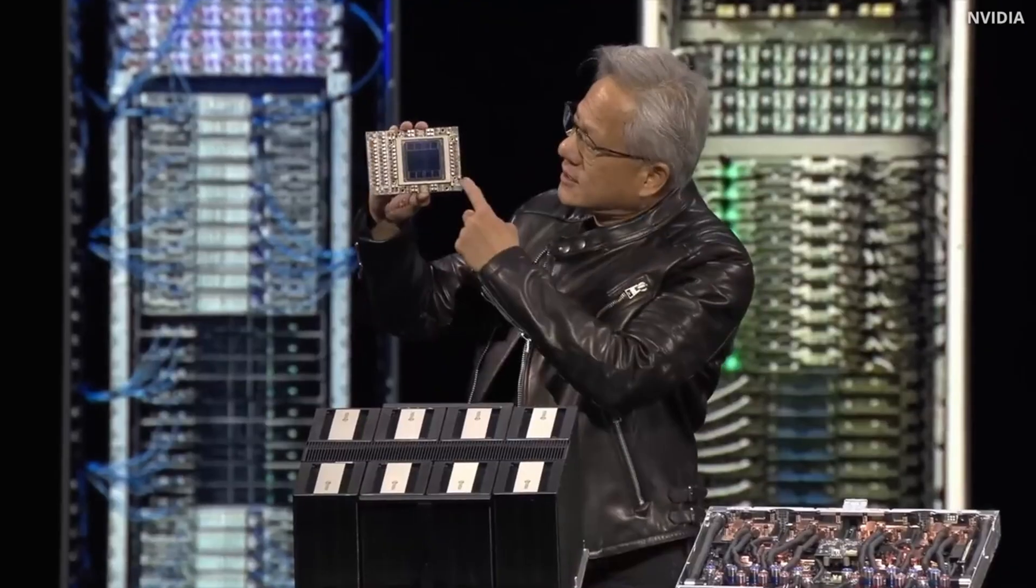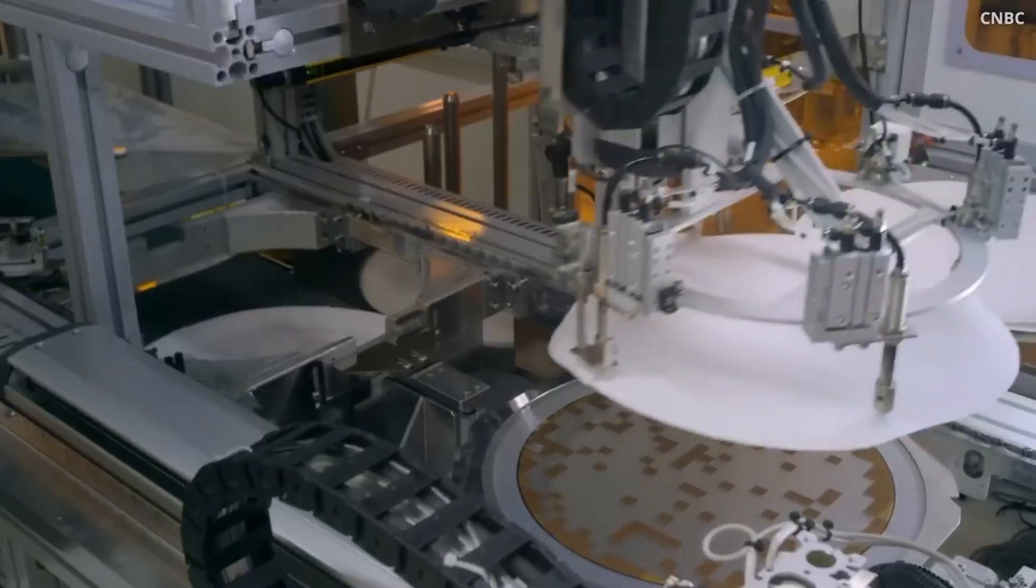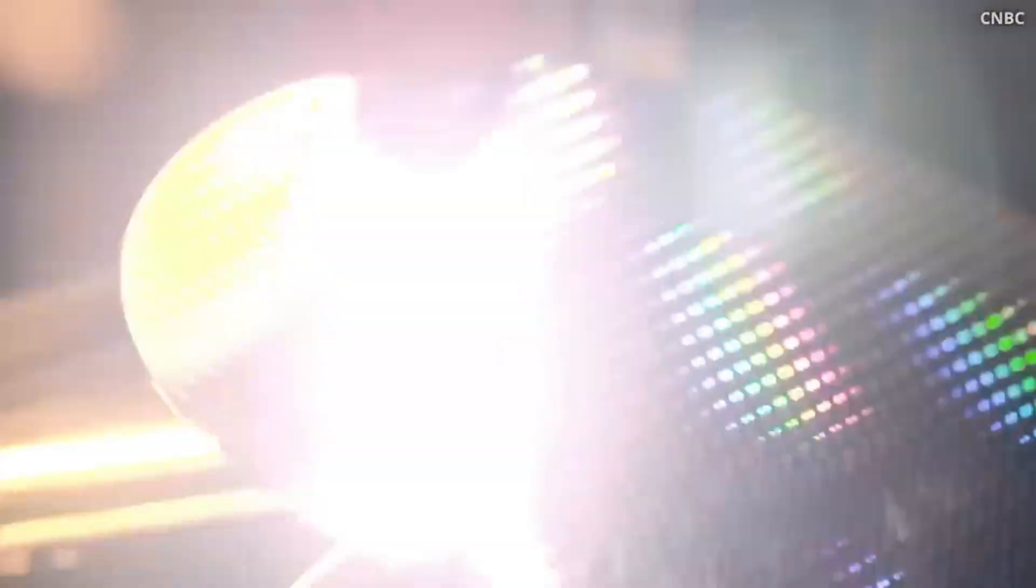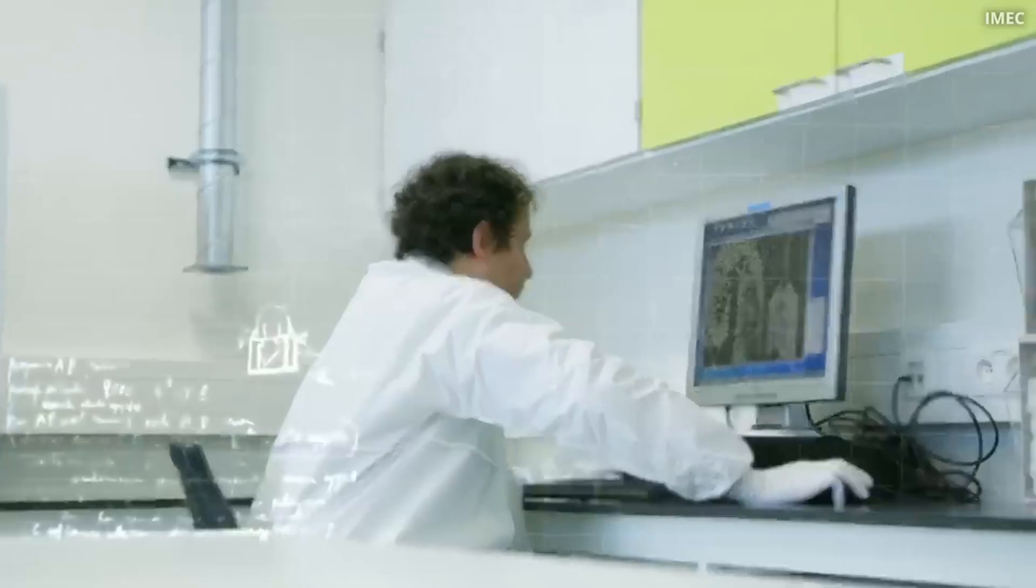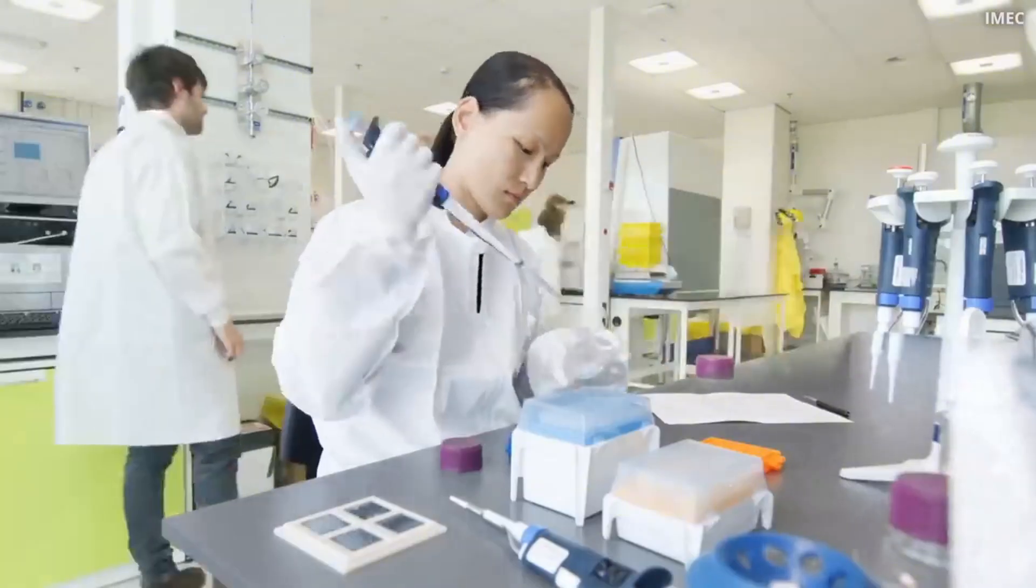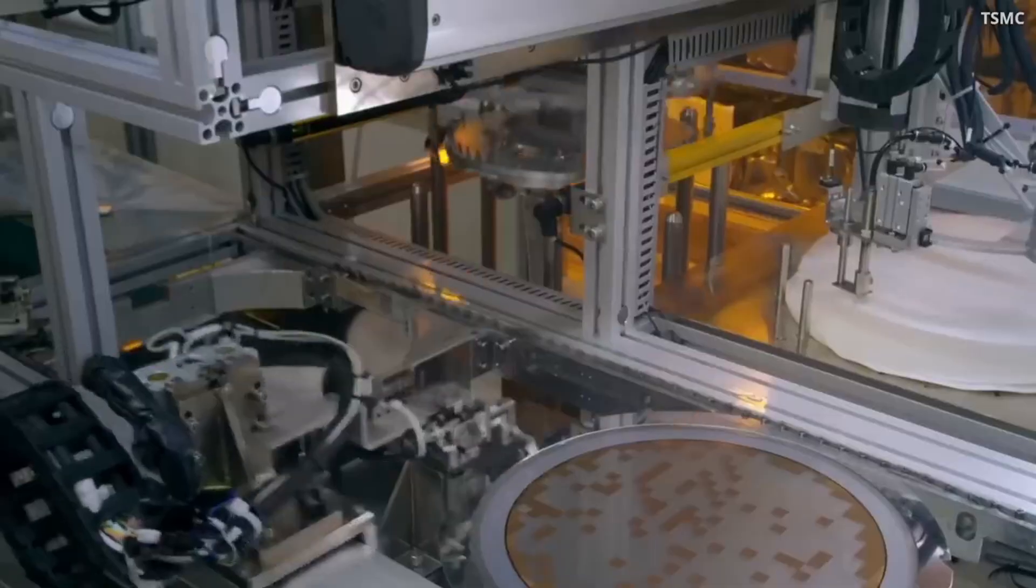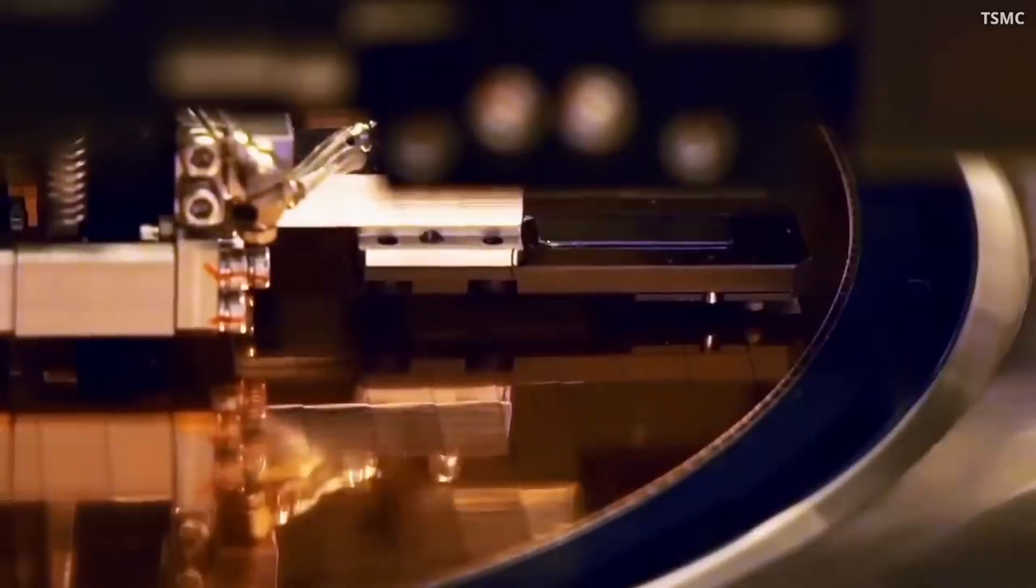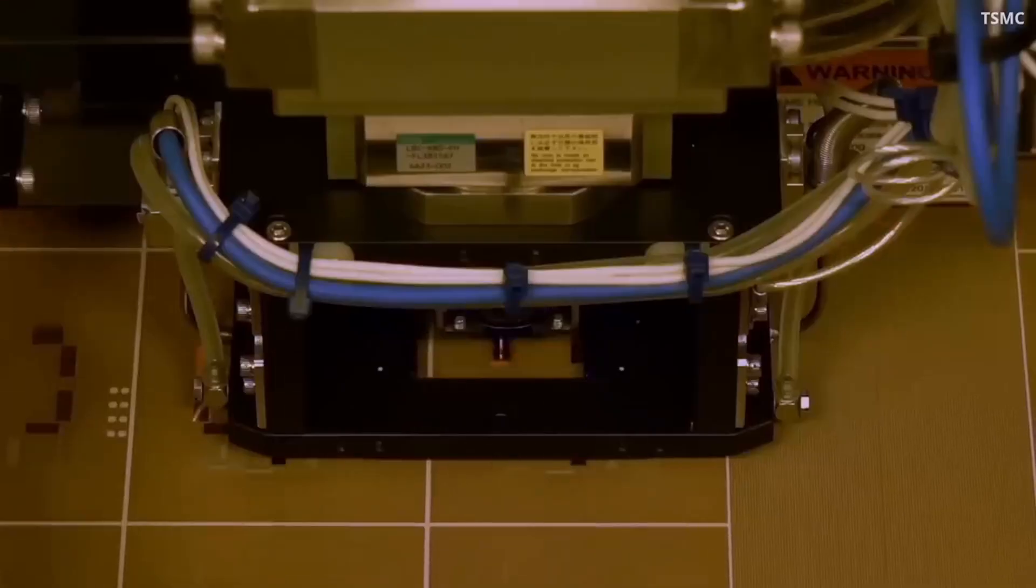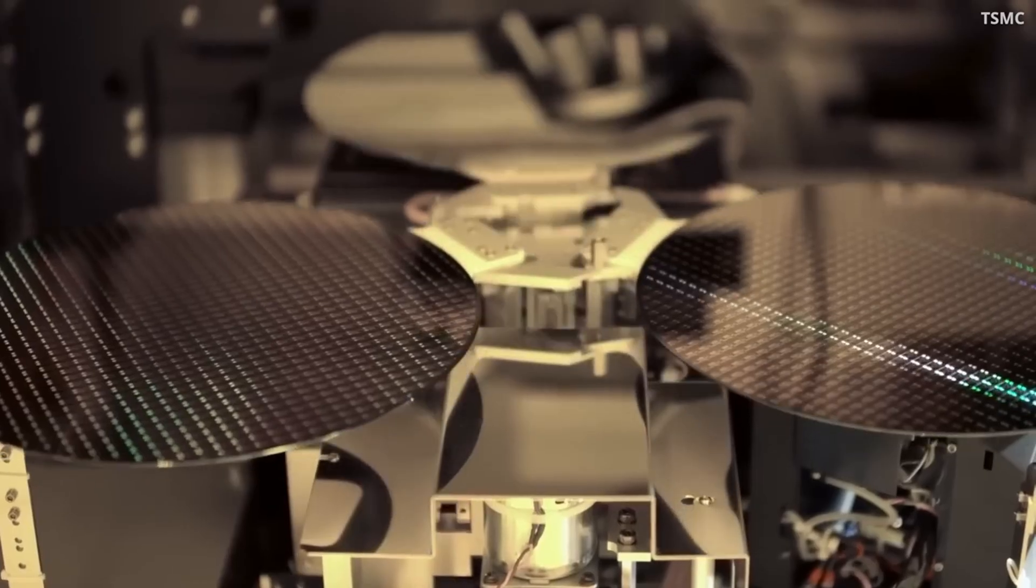In the early days, these transistors were built flat on a piece of silicon. Think of them like laying tiles on a floor. These were called planar transistors. Simple and effective, but limited. As we kept shrinking them to pack more into smaller spaces, problems started showing up. They leaked current. They weren't as reliable. They just couldn't keep up with our demands.